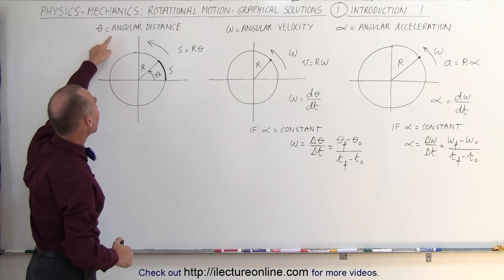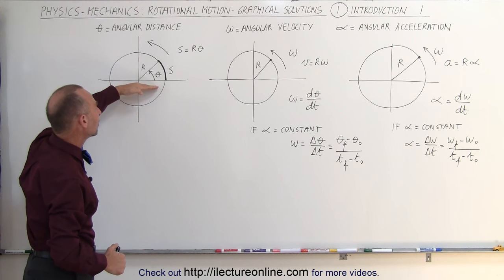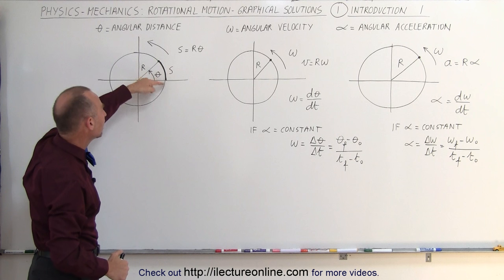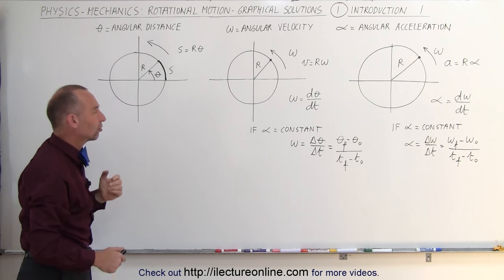So we call theta the angular distance. We have covered an angular distance of theta or we've covered a linear distance along the circle here equal to s or arc length.